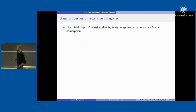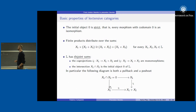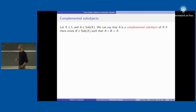Basic properties of extensive categories: the initial object is strict, finite products distribute over coproducts, and coproducts are disjoint — meaning that the coprojections into the coproduct have trivial intersection, i.e., the intersection of the two is the initial object. In particular, the square diagram is both a pullback and a pushout. This last property allows us to define complemented subobjects: a subobject A of X is complemented if there exists B such that A + B = X, in which case A ∩ B = 0.